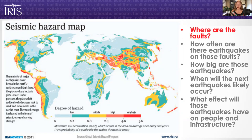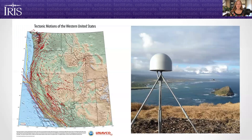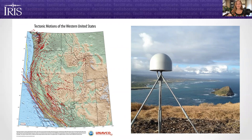The first question is: where are the faults? We have lots of different ways to approach this particular question. To start off with, we have really cool instrumentation that we can use, things like GPS sensors. You can see one of those over here in the right-hand picture. Most people have heard of GPS or global positioning systems — you may have them in your car or on your phone. We can use them for science, but the ones we have for science are very, very precise.